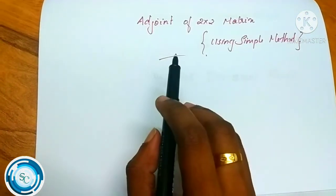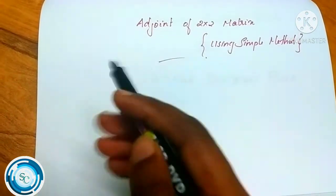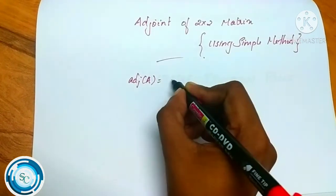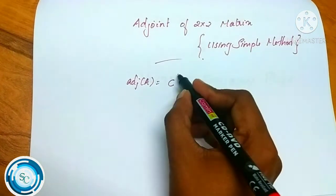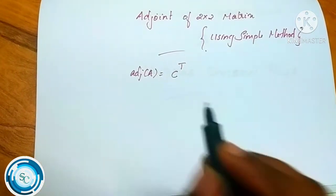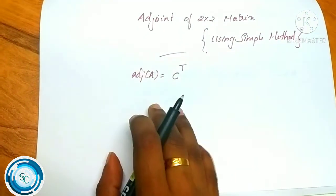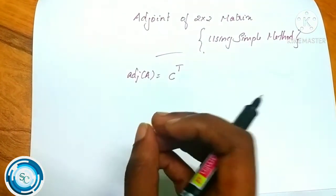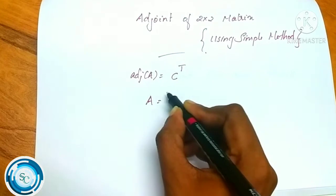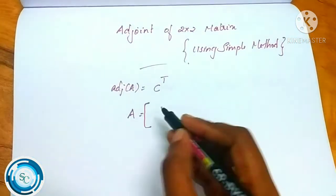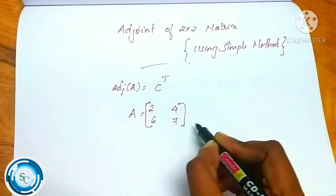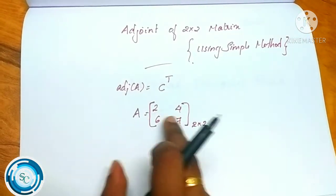To calculate the adjoint of a matrix, we will first calculate the cofactor matrix, and from that we will be able to calculate the adjoint of the 2x2 matrix.